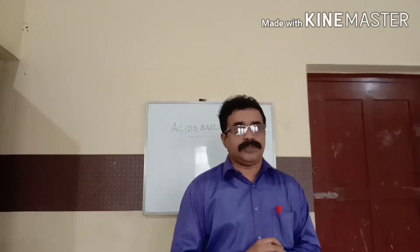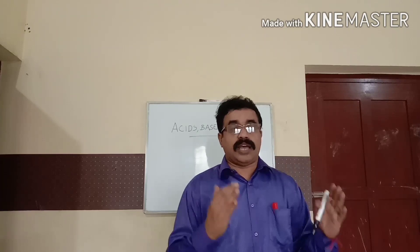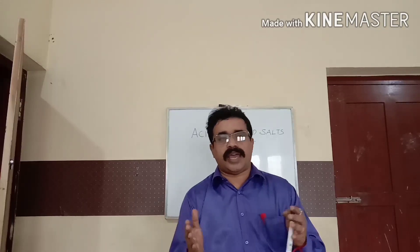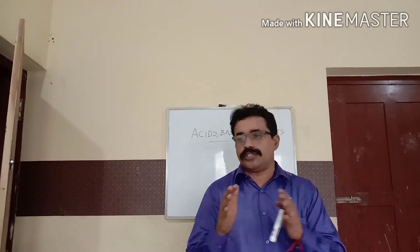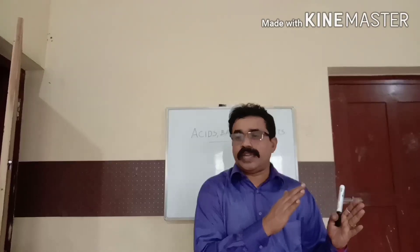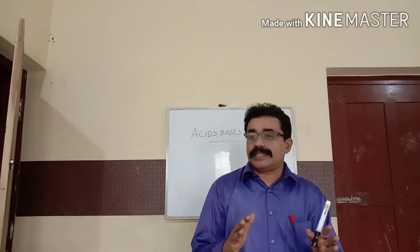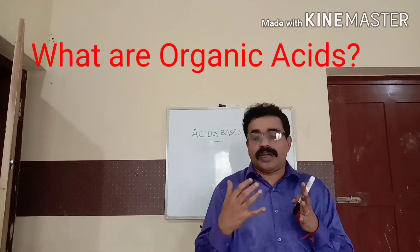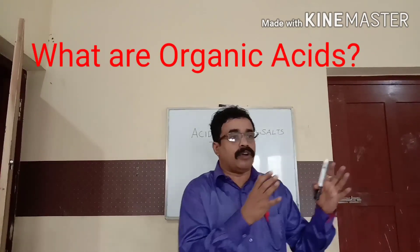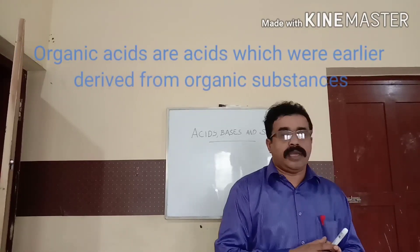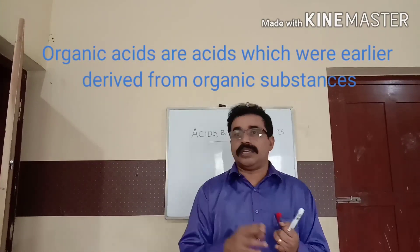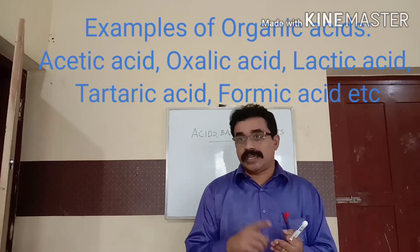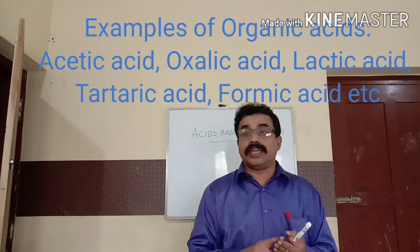Now we will look at the main classification of acids. Earlier we saw classification as dilute and concentrated solutions. Now we classify acids as organic acids and mineral acids. Organic acids are derived from living sources. Examples are oxalic acid found in tomato, lactic acid in curd, and formic acid — also known as methanoic acid — found in ant bites or nettle leaves.